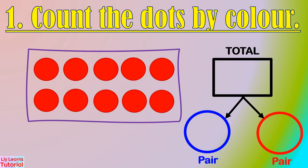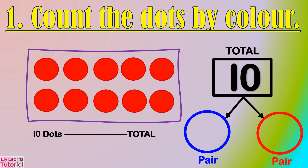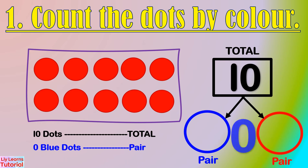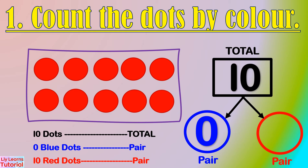The first step is to count the dots by color. We see a total of 10 dots. Now we count the blue dots — there are no blue dots, so we write 0. Now we count the red dots. There are 10 red dots. So the number pair is 0 and 10.